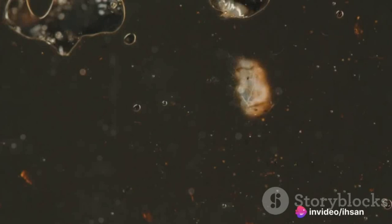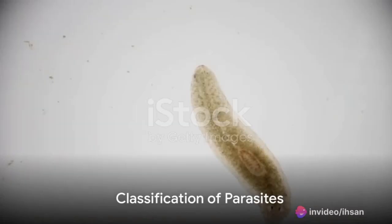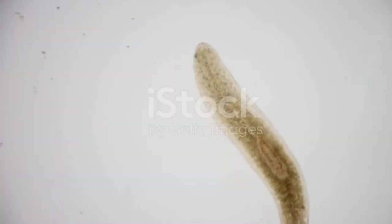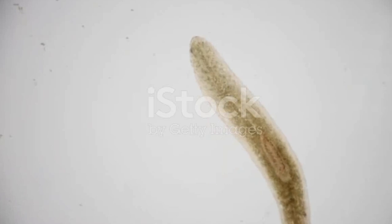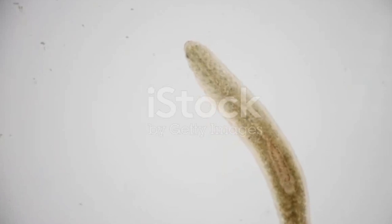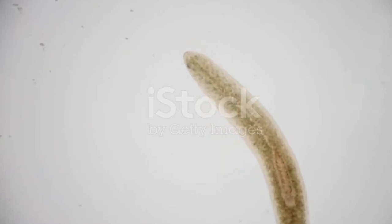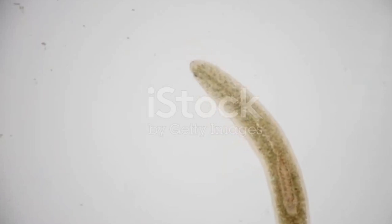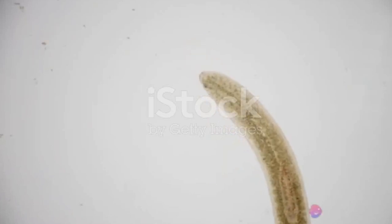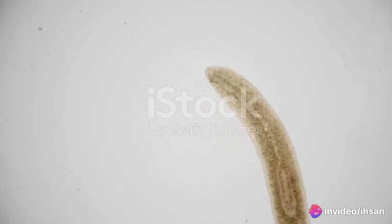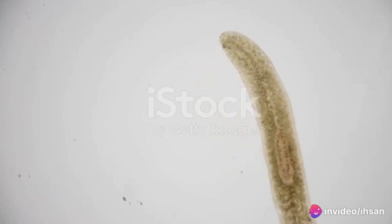Parasites come in many shapes and sizes, each with their own modes of survival. These fascinating organisms can be broadly classified into three main categories: protozoa, helminths, and ectoparasites.